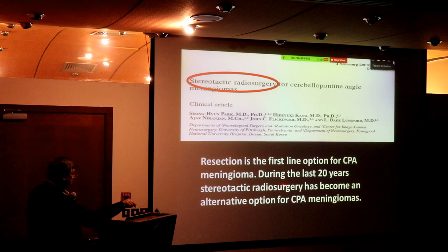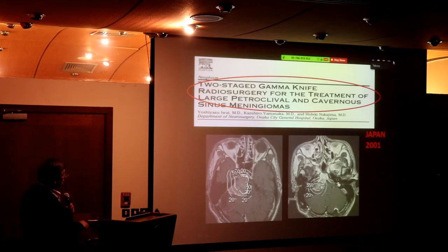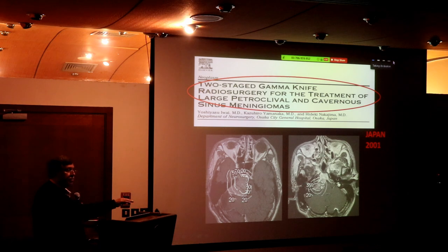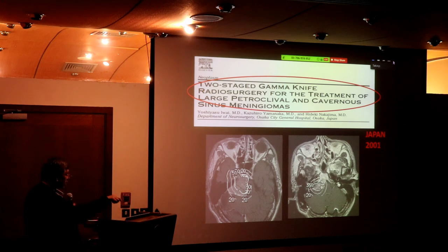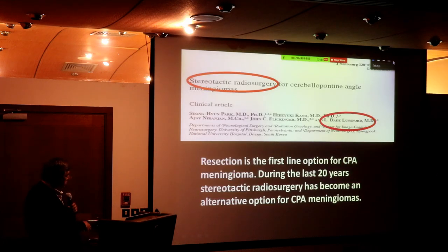They came up with another trick: staged radiosurgery — giving the dose in multiple sessions 12 months apart. This is radiotherapy, not radiosurgery. Both small and large tumors should not be given gamma knife — small ones are good for surgery, and large ones are not suitable for gamma knife either. The same center admits surgical resection is the first-line option for these meningiomas.